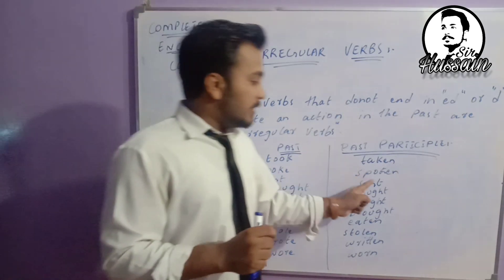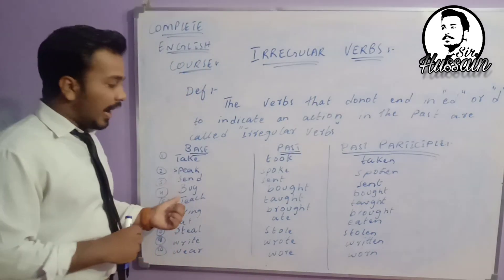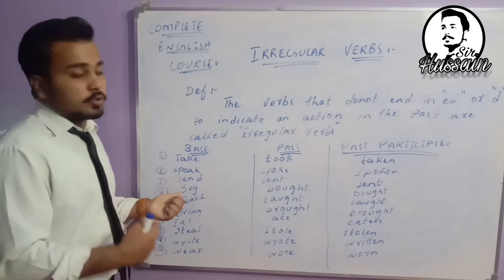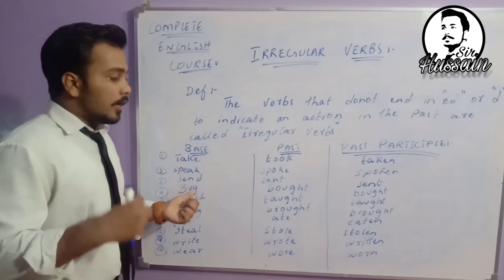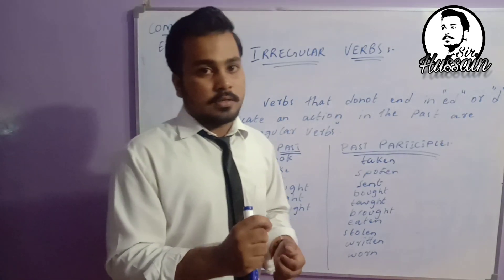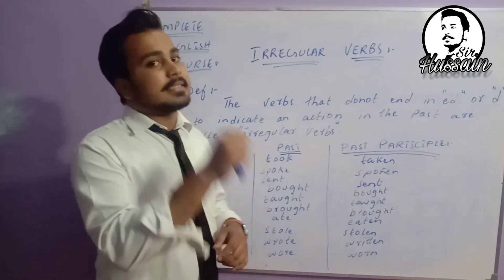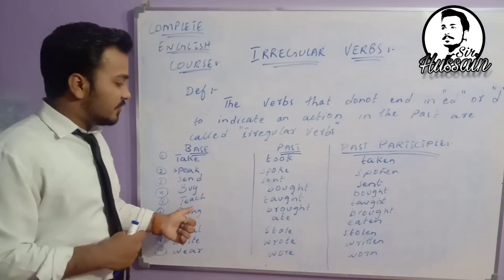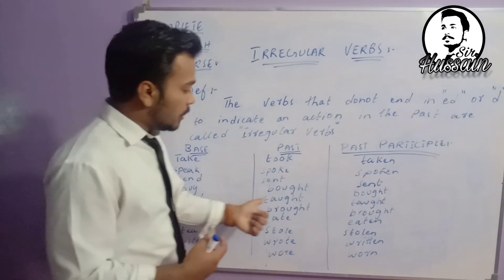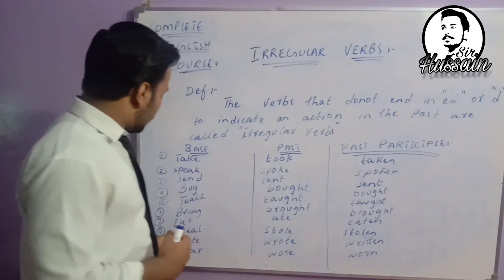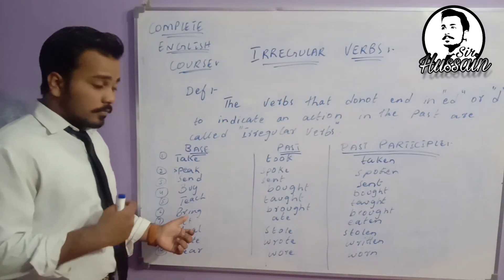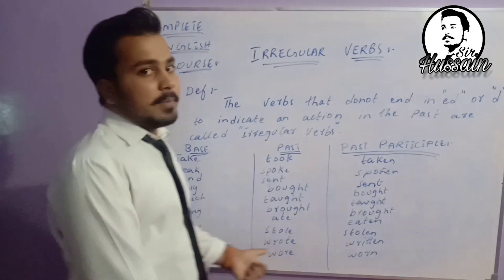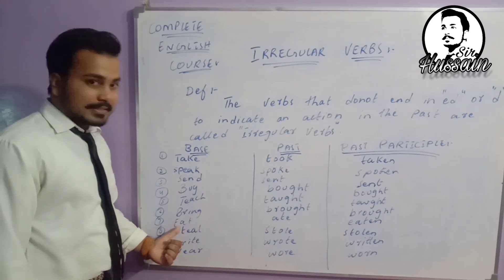Number four: 'buy', meaning to purchase. The second form is 'bought' — 'ed' is not coming, so it is an irregular verb: buy, bought, bought. Number five: 'teach', meaning to instruct — teach, taught, taught. Number six: 'bring', meaning to carry — bring, brought, brought.